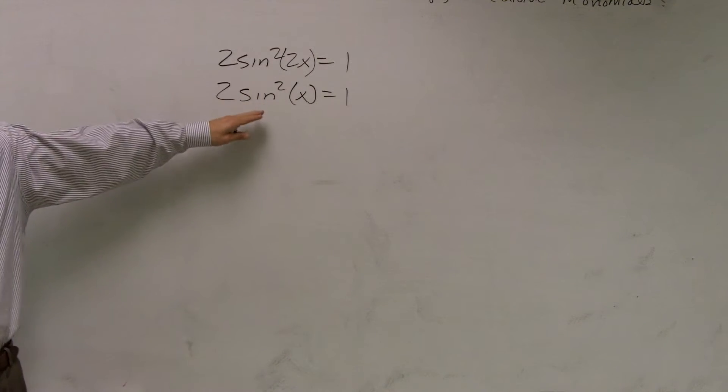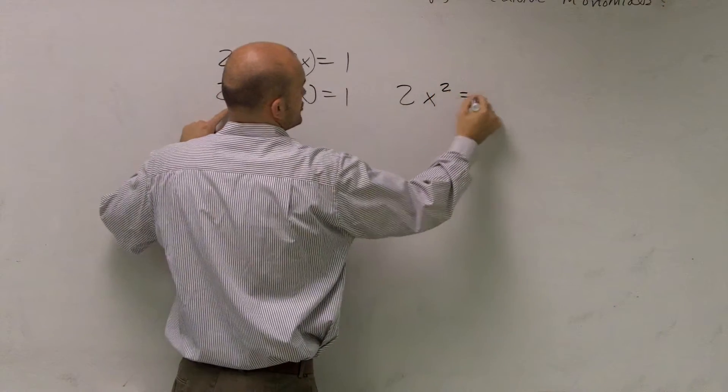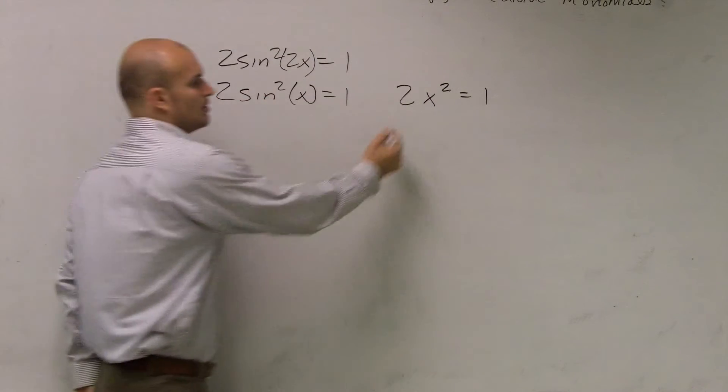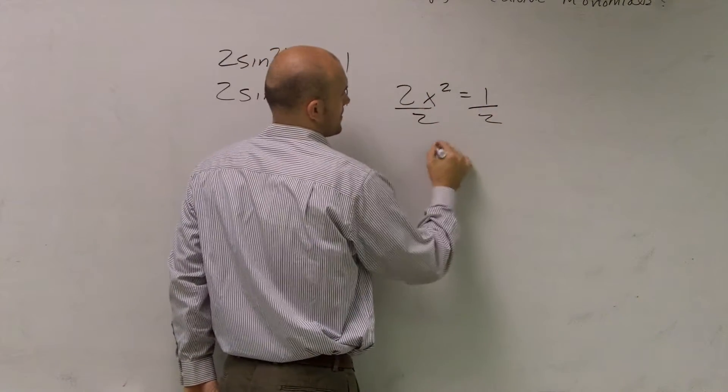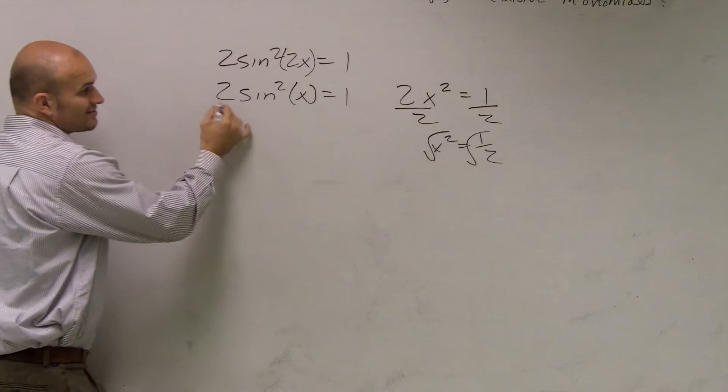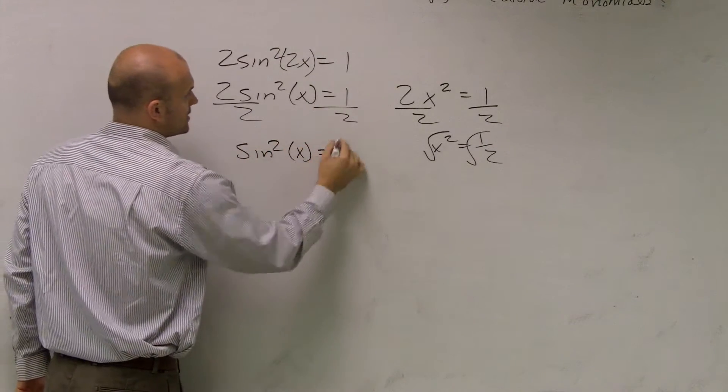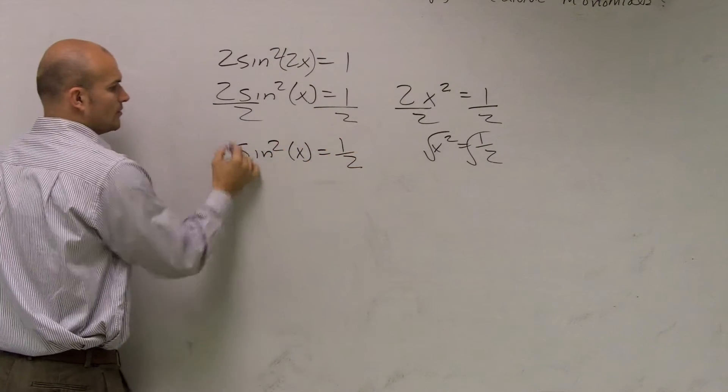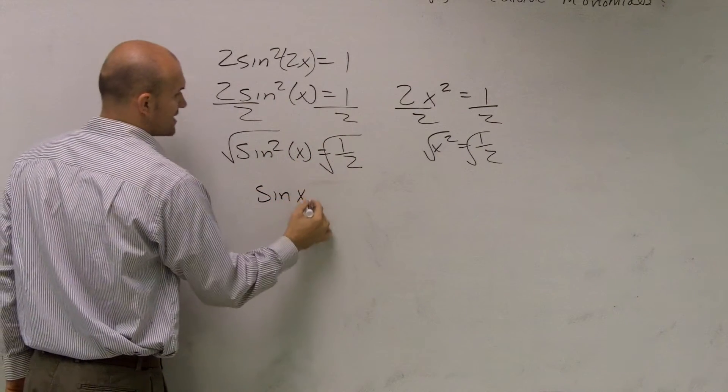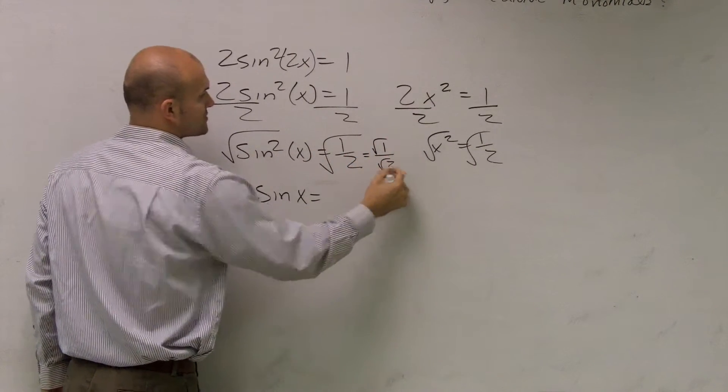Just like how I said, if you guys are having trouble, solve it without the trig function, right? If you're having trouble, just solve it without the trig function. So here, what would you do? You can divide by 2, and just take the square root, right? Well here, same thing. Divide by 2, sine squared of x equals 1 half, take the square root. So we get sine of x equals the square root of 1 over the square root of 2.